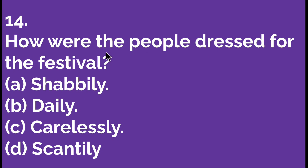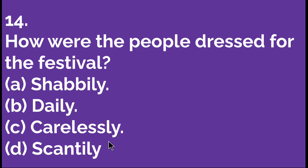This question is: how were the people dressed for the festival? Option A: shabbily. Option B: carelessly. Option C: scantily. Option D: in gaudy, glittering clothes. Shabbily means in a dirty manner; that is not correct. D is the right answer — they dressed scantily, in bright and glittering clothes. So let's move to the next question.